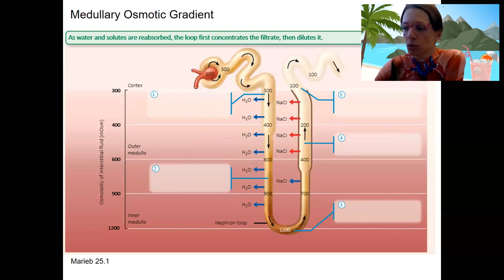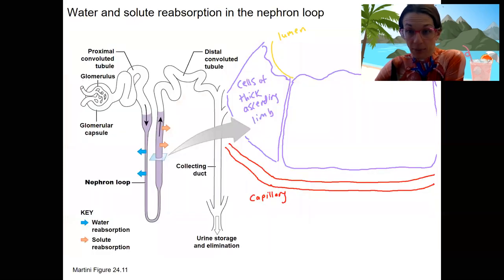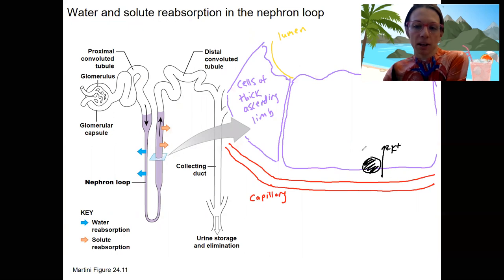What about this active transport? Let's zoom into the ascending limb. Here we are, ascending limb, and this is the thick portion where the most active transport occurs. One thing we're going to need is a sodium potassium pump. That's going to allow two potassium in, three sodium out.